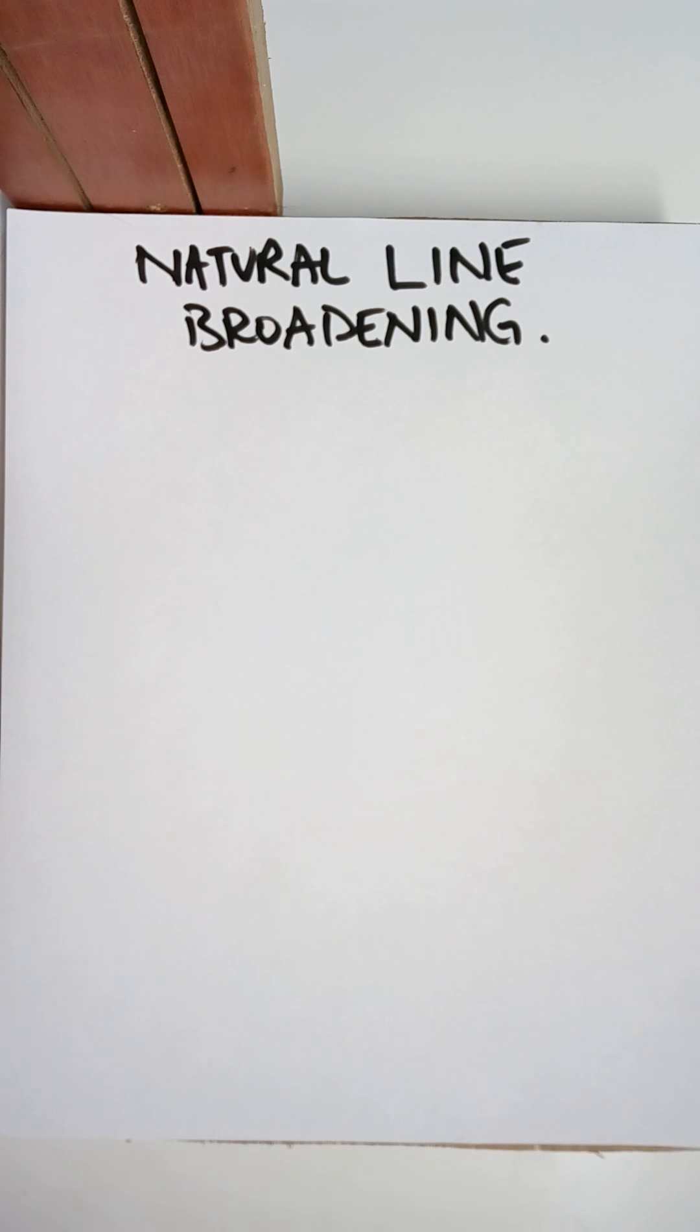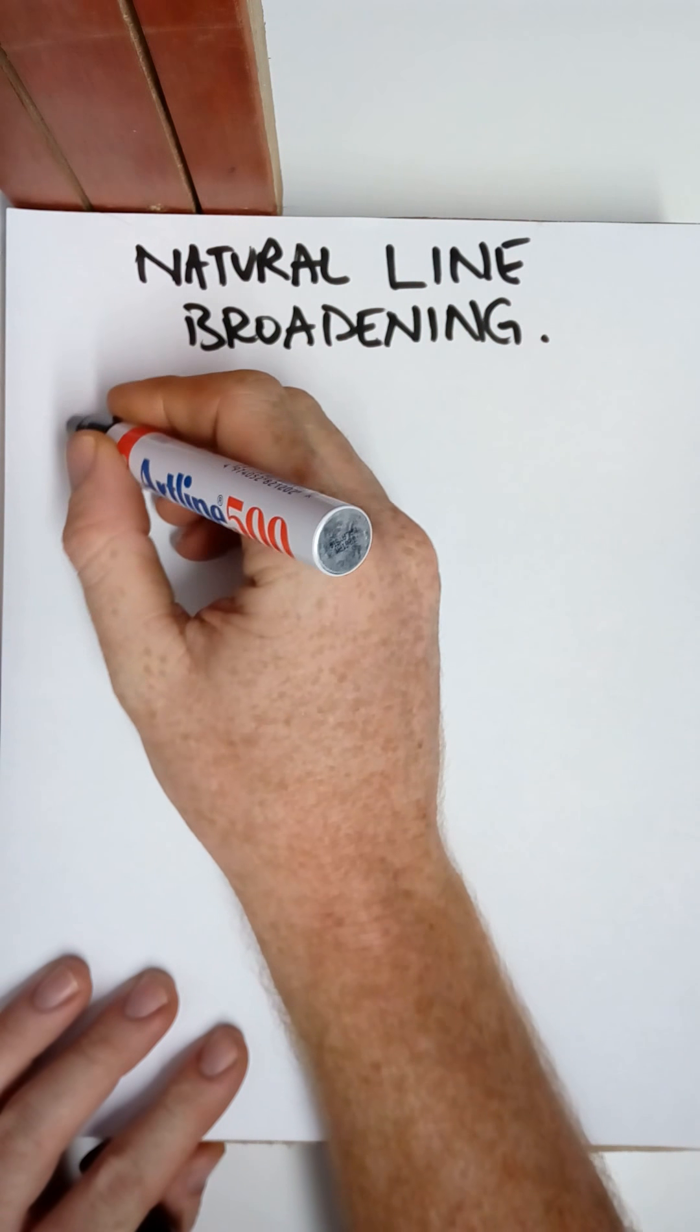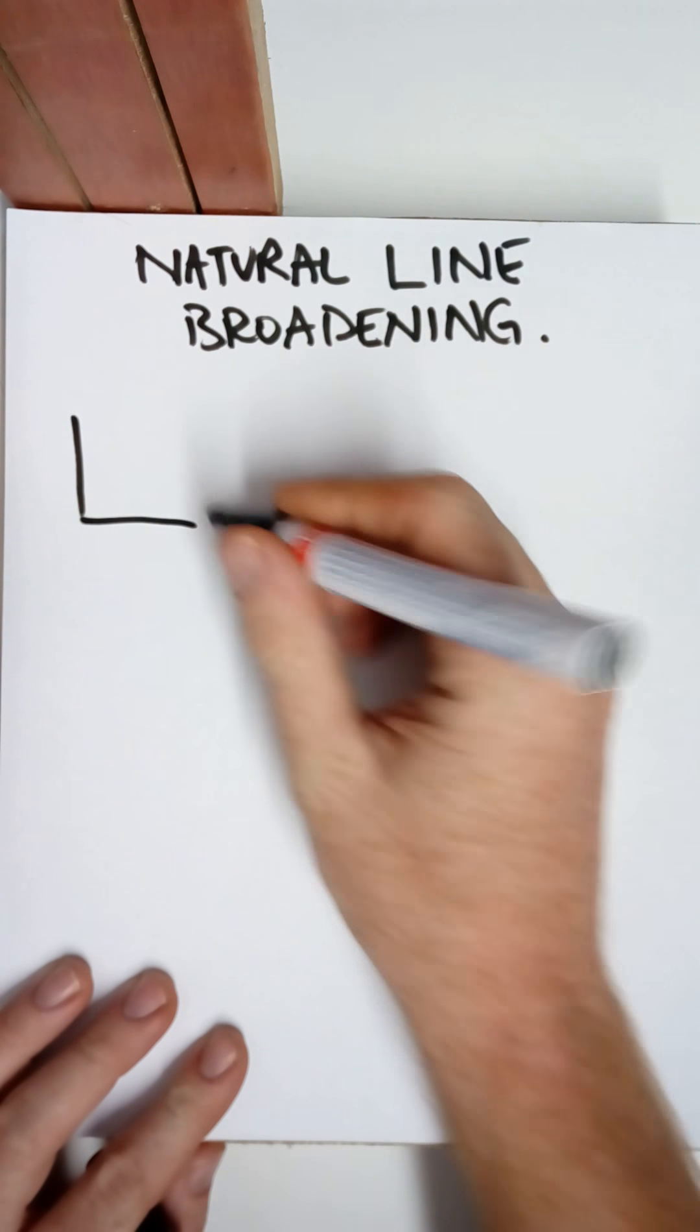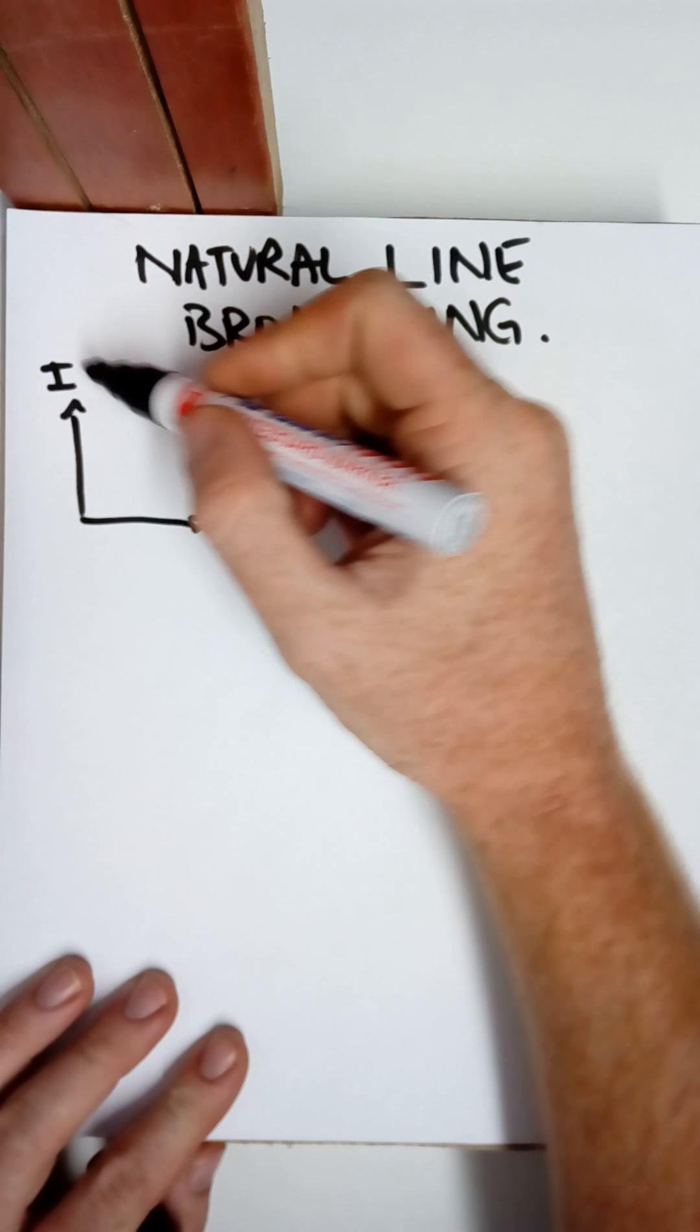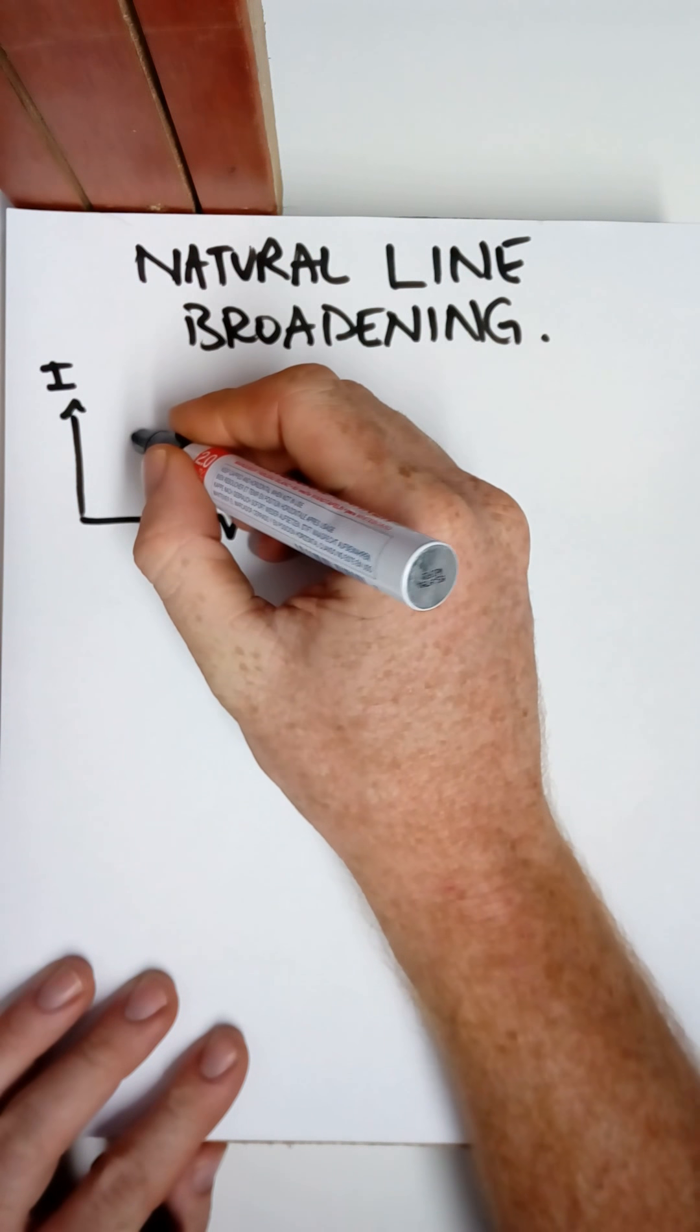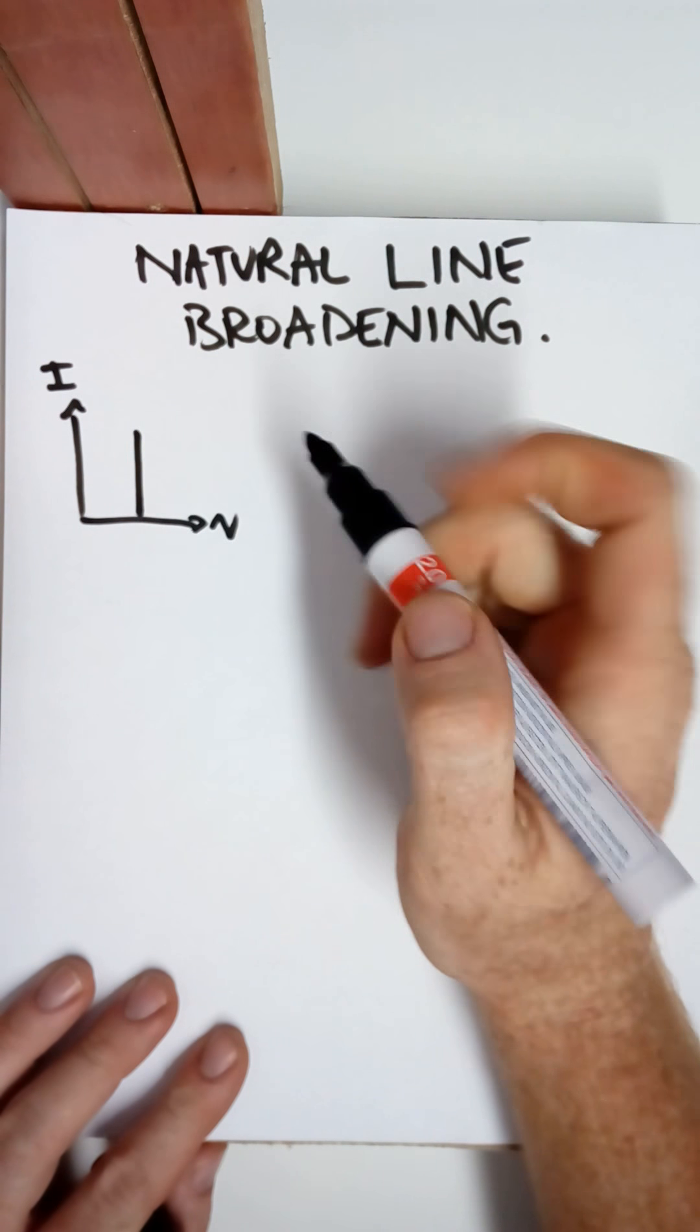So this lecture we're going to be talking about natural line broadening. You'll remember back to our first lecture that one of the very useful properties of lasers was that they're monochromatic, meaning that if we plot the intensity of the light emitted versus the frequency of that light, they're very close to a single frequency.